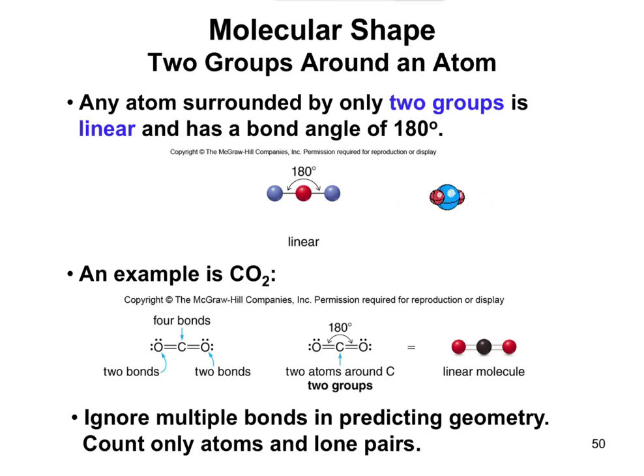Notice at the bottom it says ignore multiple bonds. Even though it's a carbon double bonded to an oxygen on both sides, you don't say there's four bonds when talking about molecular shape. You're specifically talking about how many different things it's attached to. In this case, it's two groups and it makes it linear.